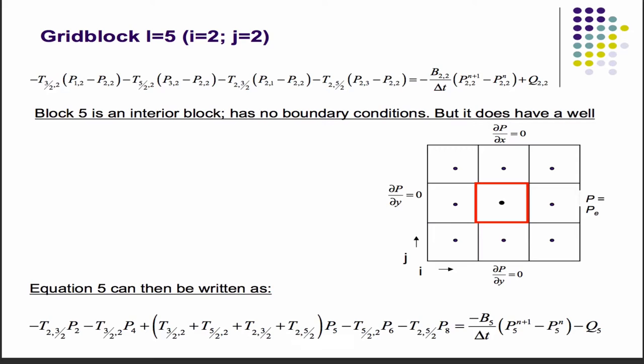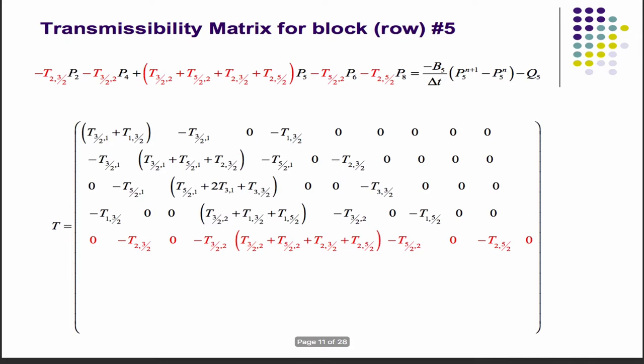The center one is easy in that it doesn't have any neighbors, I mean, it has four neighbors, so you get a 4T here, but you do have a constant rate producer in that well, so that goes into the Q2,2 term. Or in this equation, we're using the L indices, so Q5. It's a fifth grid block. Q5 is going to have a value equal to minus 10,000 or whatever the value was. So you do have a well there. That becomes the fifth row.